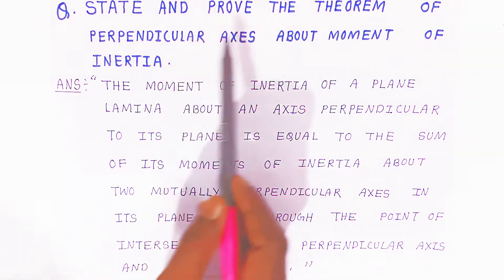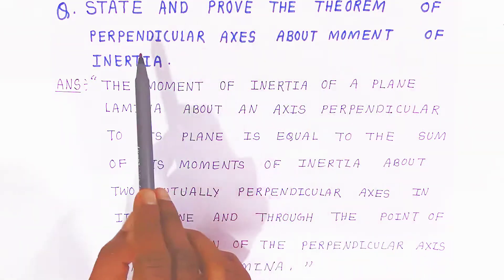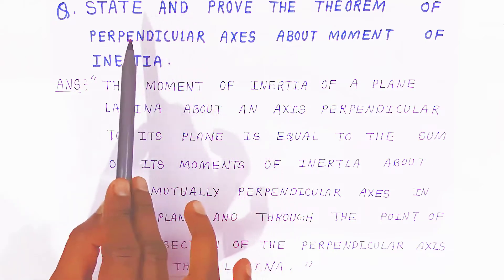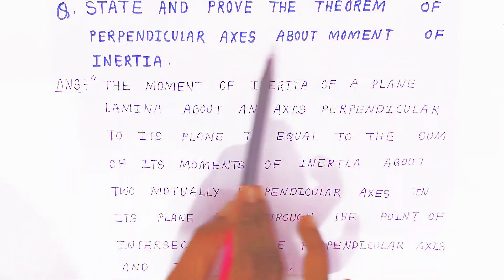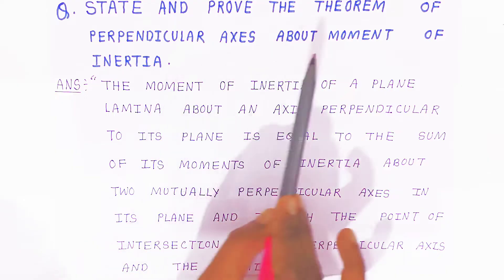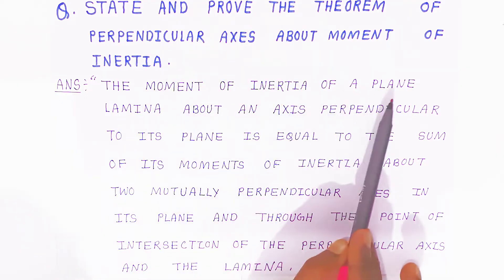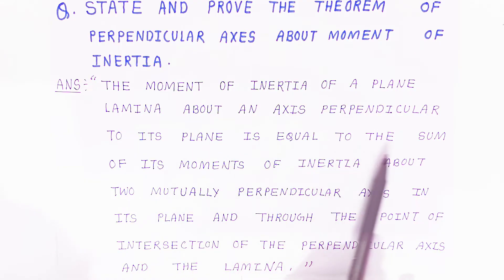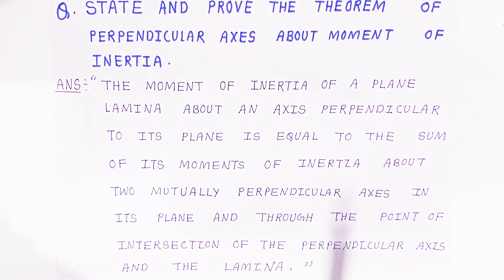Now we are going to state and prove the theorem of perpendicular axis about moment of inertia. The moment of inertia of a plane lamina about an axis perpendicular to its plane is equal to the sum of its moment of inertia about two mutually perpendicular axes in its plane and through the point of intersection of the perpendicular axis and the lamina.